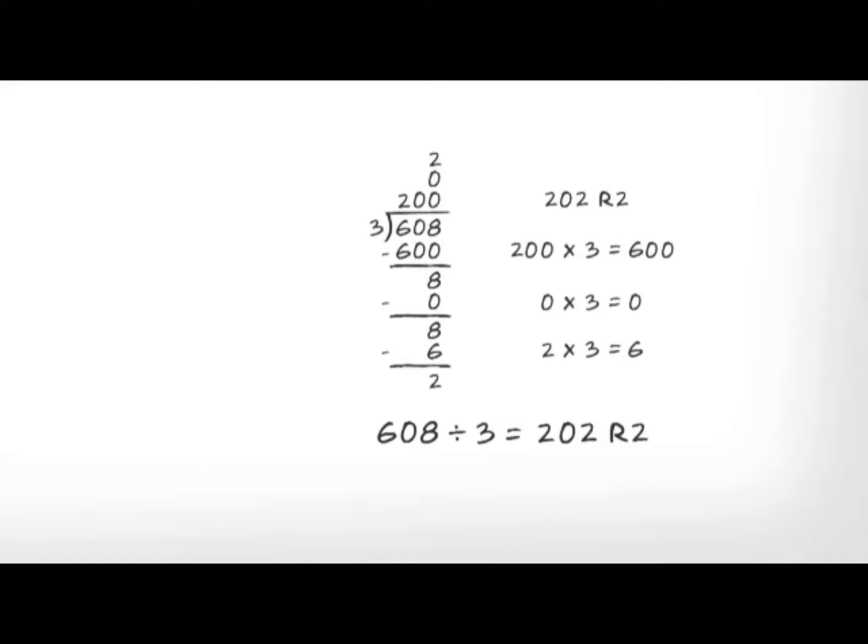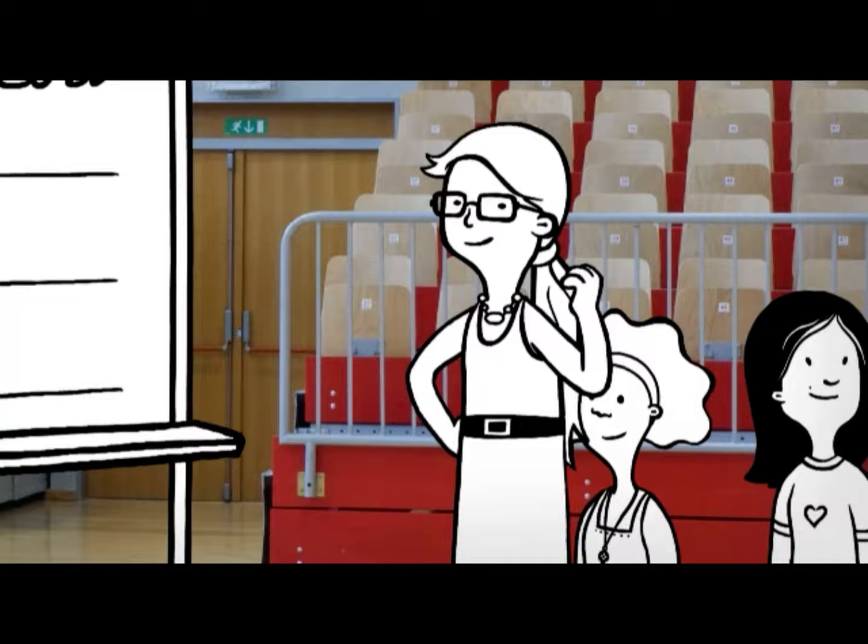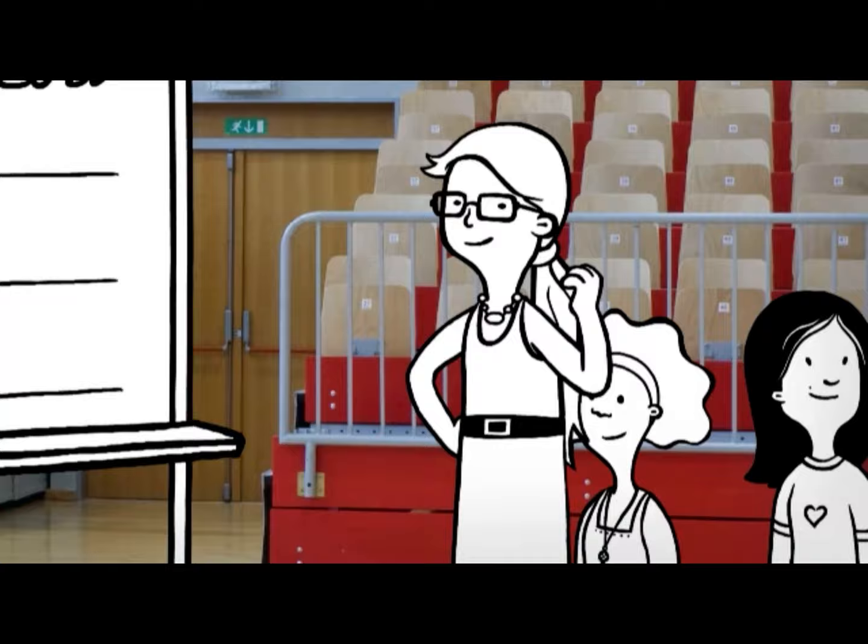Taking out multiples of hundreds, tens, and ones helps me solve division problems with 3-digit dividends. That helps Tina divide the students who want to hear the band's music into equal groups, although there are 2 students left over that aren't in the 3 groups.